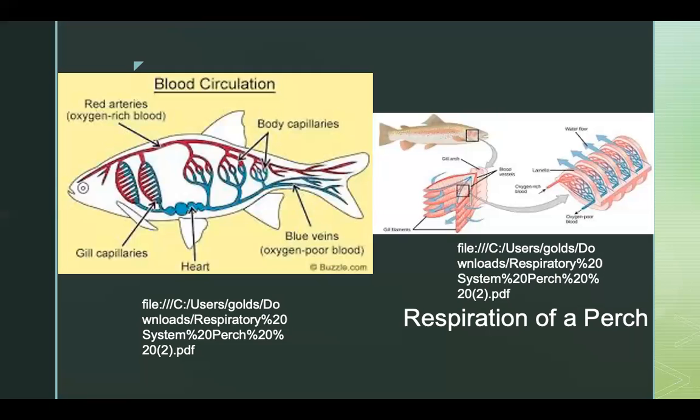Although the swim bladder is not a strict member of the respiratory system, it can function as an important organ for breathing. It is usually filled with gases, primarily oxygen, which is why it can be considered part of the respiratory system.